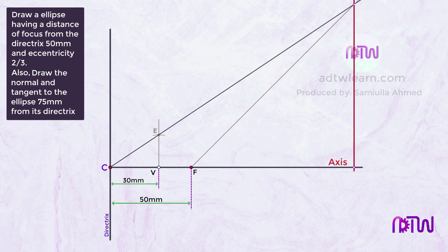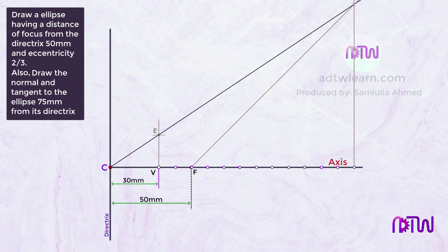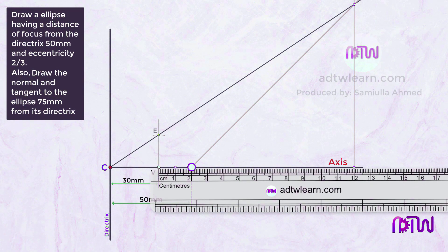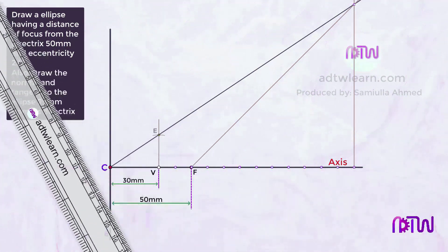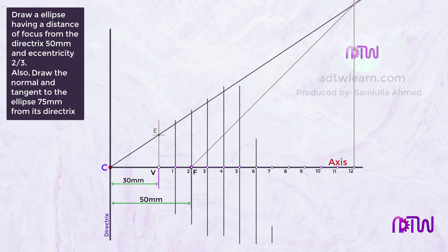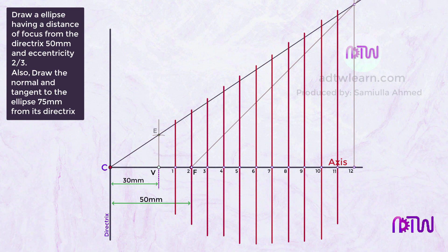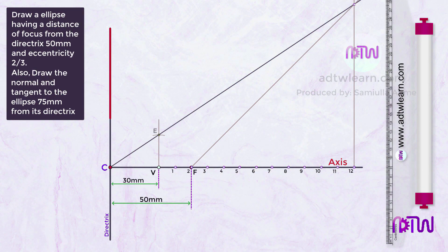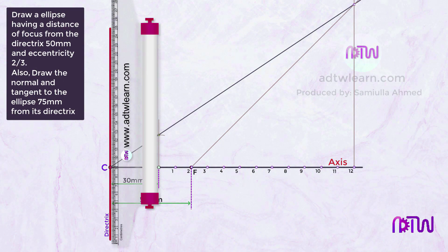Mark points on the axis at 10 millimeter intervals from V up to this final vertical line. Name these points 1, 2, 3 and so on up to 12. At each point, draw a vertical line so that it touches the inclined line CE. Use a drafter or roller scale, taking the axis as reference, to draw the vertical lines at all the points.